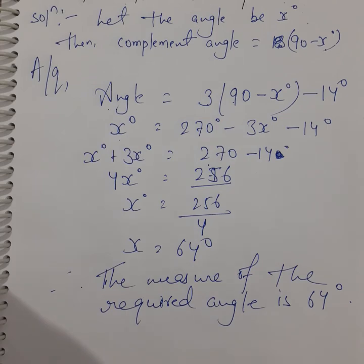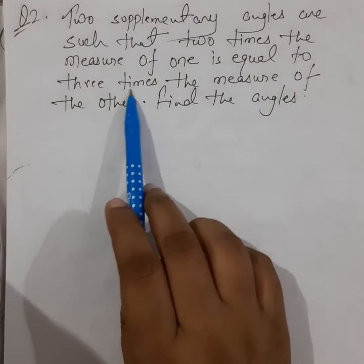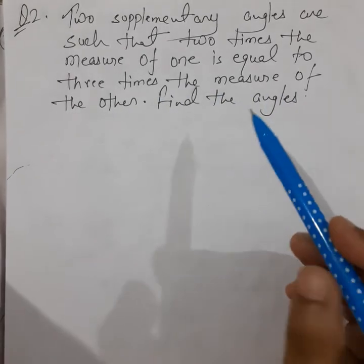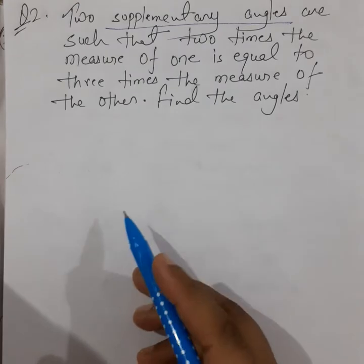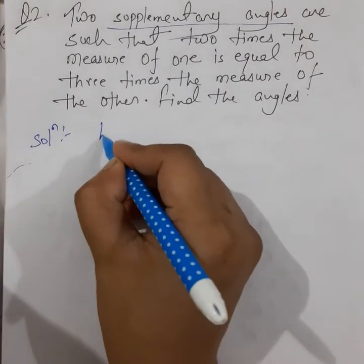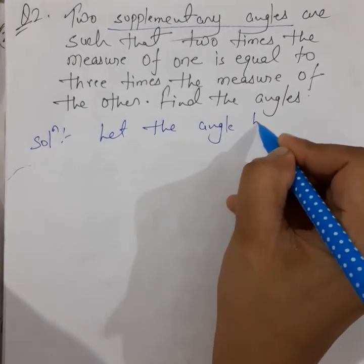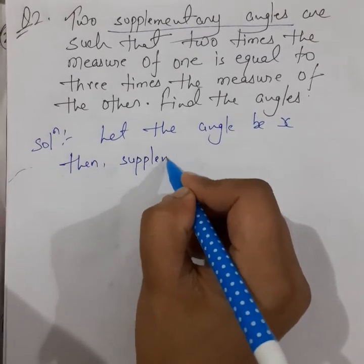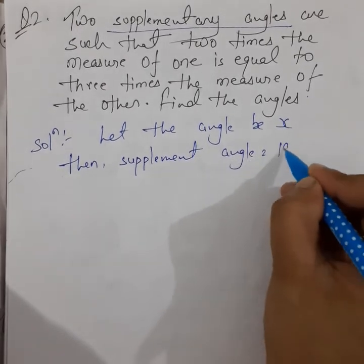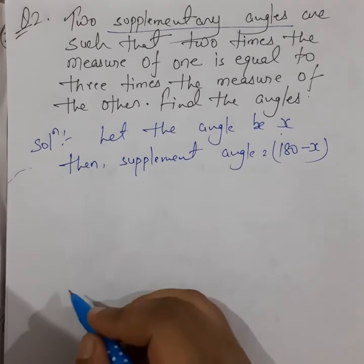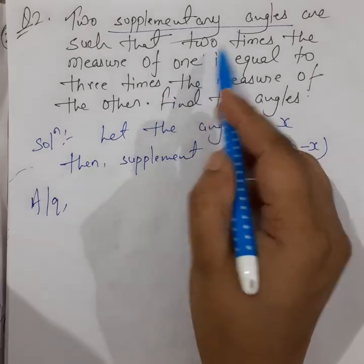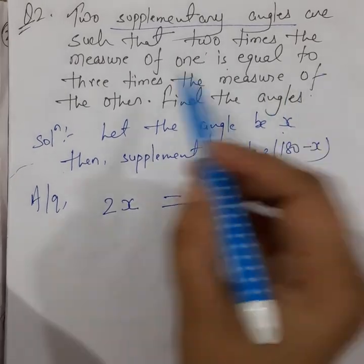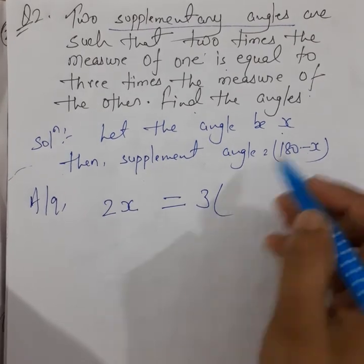The next question: two supplementary angles are such that 2 times the measure of one is equal to 3 times the measure of the other. Since we are dealing with supplementary angles, let the angle be x. Then the supplementary angle is 180 − x. The question says 2 times one angle equals 3 times the other, so 2x = 3(180 − x).